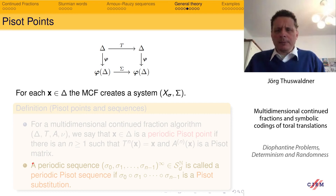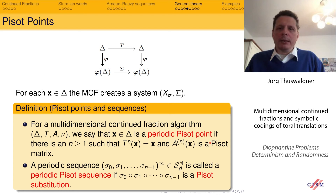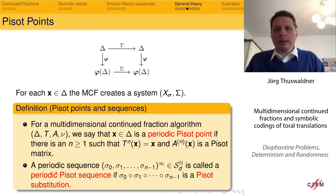A point x in Δ is a periodic Pisot point if the continued fraction algorithm is periodic and the matrix produced within one period is a Pisot matrix — one whose characteristic polynomial is the minimal polynomial of a Pisot number. A periodic sequence of substitutions is called a periodic Pisot sequence if this substitution is a Pisot substitution — a substitution whose incidence matrix is a Pisot matrix. For such periodic sequences, if you block the sequence, you get a single substitution repeated again and again, and the dynamical system defined by this language is a well-known substitutive dynamical system.